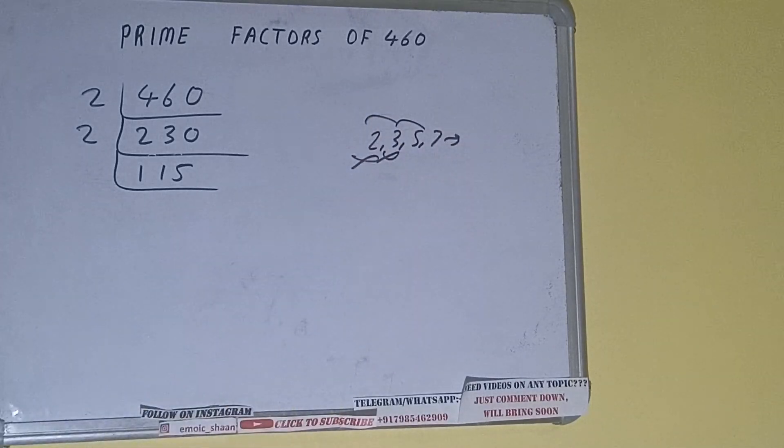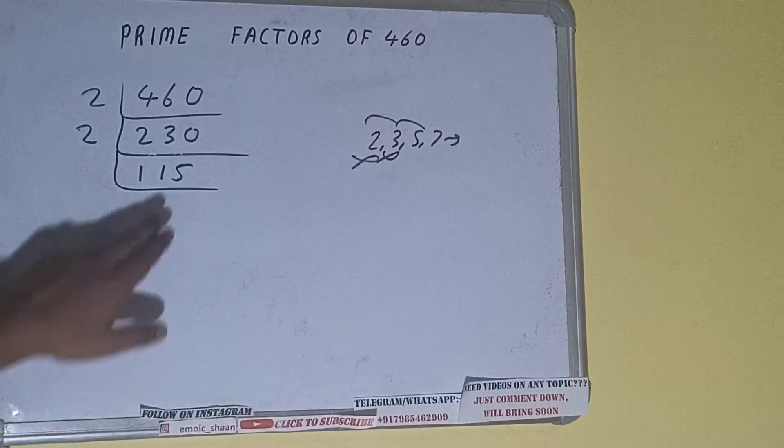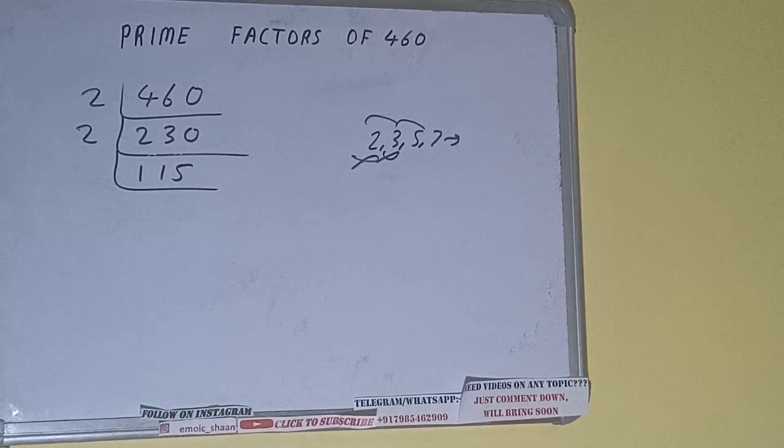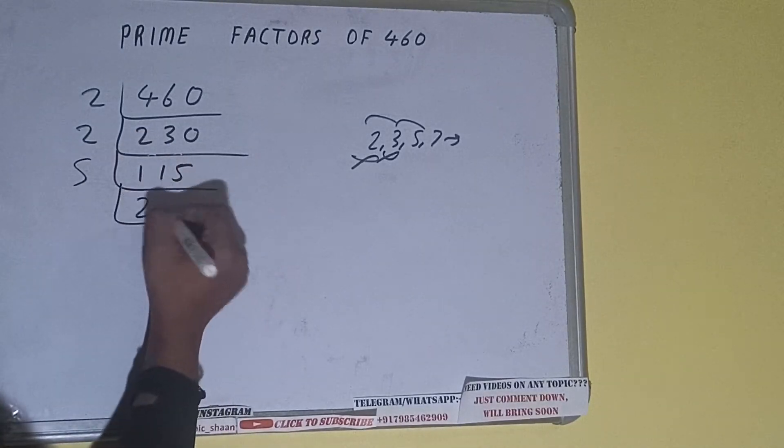So let's check with 5. The last digit is 5. So it is divisible by 5. Divide it and we'll be having 23.